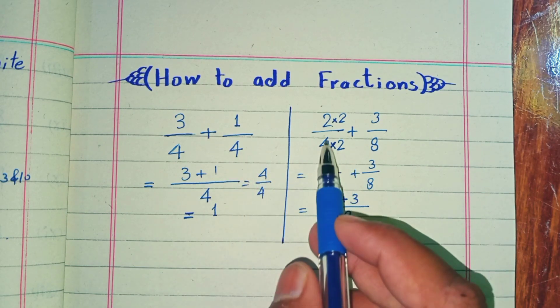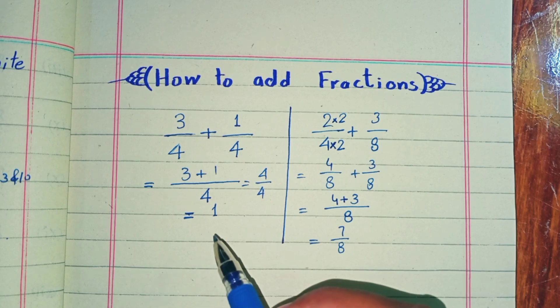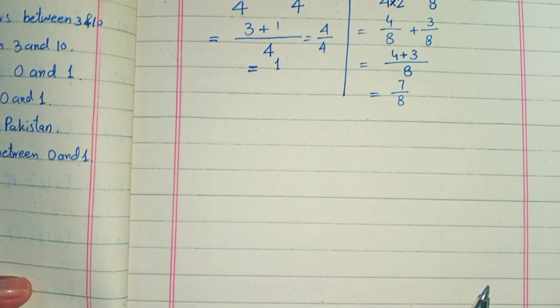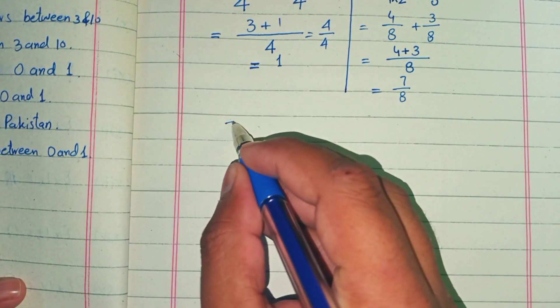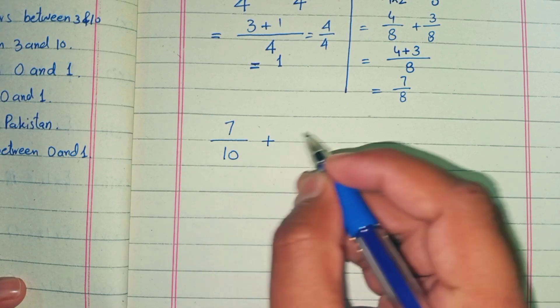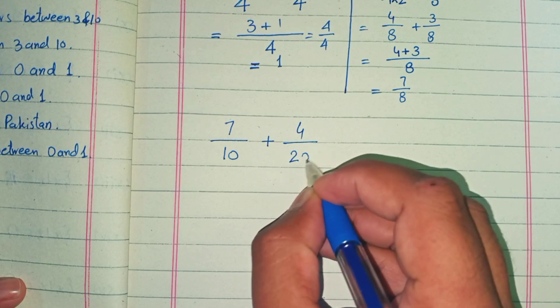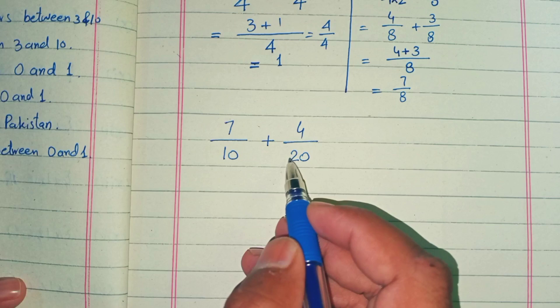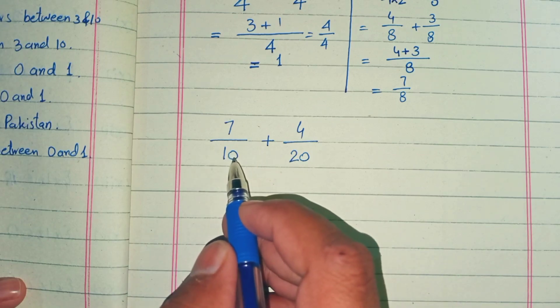This is the second method where you make the denominators equal. Now let's discuss another method: the LCM method to add fractions. If we have 7/10 plus 4/20, we can make 10 equal to 20, but here we discuss the third method, which is the LCM method. You have to take the LCM of 10 and 20.